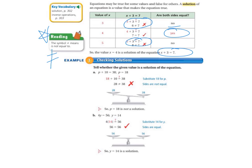Example 1, checking solutions. Tell whether the given value is a solution of the equation. So letter A, p plus 10 equals 38. So we substitute in p equals 18. So 18 plus 10, does that equal 38? No. When we add 18 plus 10, that only equals 28. So 28 does not equal 38. The sides are not equal. So p equals 18 is not a solution.